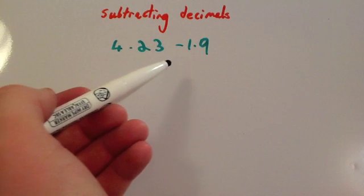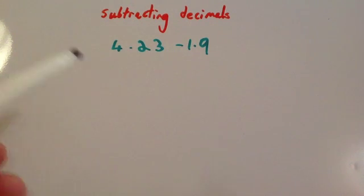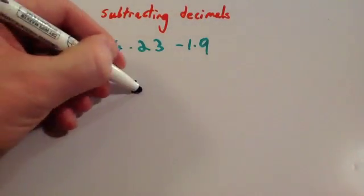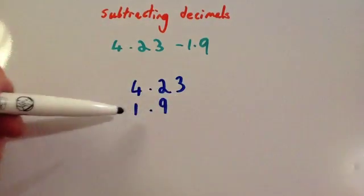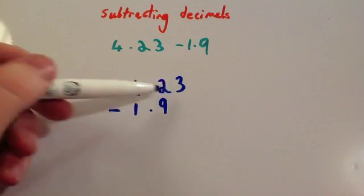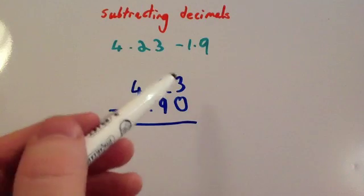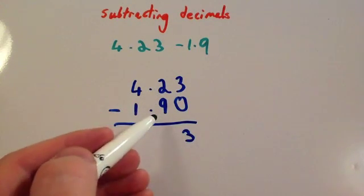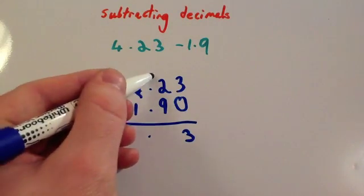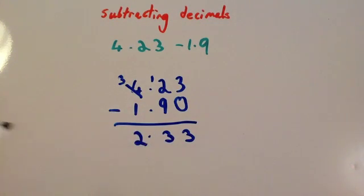Our next example is 4.23 subtract 1.9. When you're lining these up using the column method, make sure you're lining up the decimal points. Particularly with subtraction, I find it's quite useful to make sure that the numbers are the same length. So 4.23 subtract 1.9. As you notice, the number you're subtracting is shorter length. It's only got one decimal place, whereas this one's two decimal places. So I would just put a zero there to make the numbers the same length. It's actually quite important whenever the top one's shorter than the bottom one to do that. 3 subtract 0 is 3. 2 subtract 9 you can't do, so you need to borrow one from the 4, make it a 3 and make that a 12. 12 subtract 9 is going to be 3. And 3 subtract 1 is 2. So that should be 2.33.